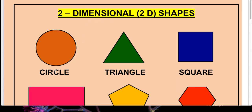The first example is circle — it is well known to us. Hum sab jante hai circle kya hota hai. Next, this shape is known as triangle. Ish shape ko hum triangle bolte hai. Triangle ke kitne sides hote hai? One, two, three — so triangle is having three sides.